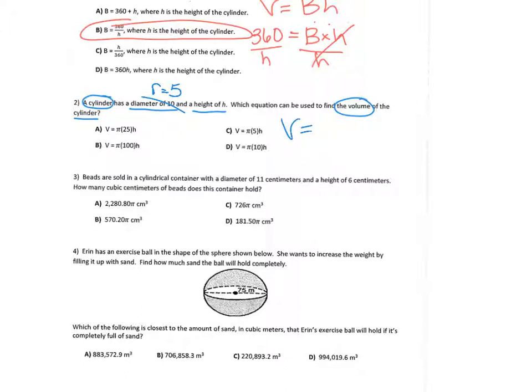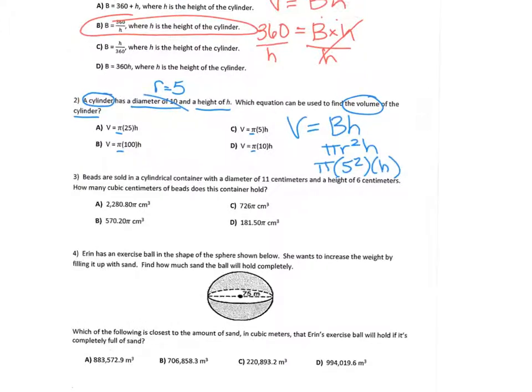So the volume of a cylinder is area of the base times the height. And since it's a cylinder, our base is a circle. So it's really pi r squared times height. If you look at your answer choices, they already have pi included. It's C. So if we plugged in for the radius, 5 squared times the height.